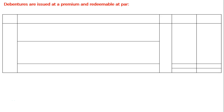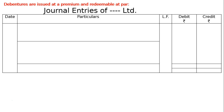The question is: pass necessary journal entries for the issue and redemption of debentures in the following cases. Part A: Rs 40,000, 12% debentures at Rs 100 each, issued at a premium of 5%, redeemable at par. The journal entries are of dash-dash Limited, as the company's name is not given.